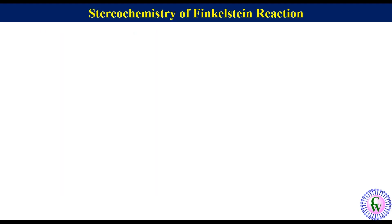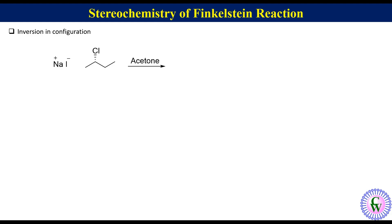Regarding the stereochemistry of the Finkelstein reaction: since the reaction involves an SN2 mechanism, there will be inversion in configuration. Let's take S-2-chlorobutane and allow it to react with sodium iodide in acetone. In this drawing we can see that the leaving group, chloro, is projecting down the plane of the paper.